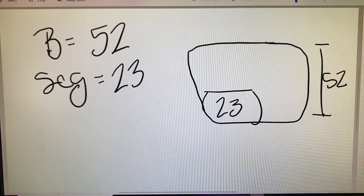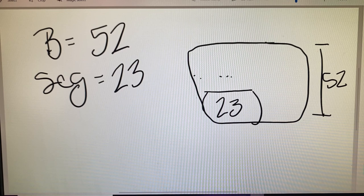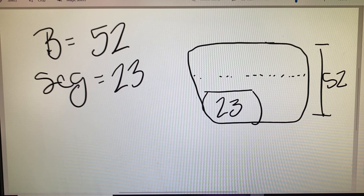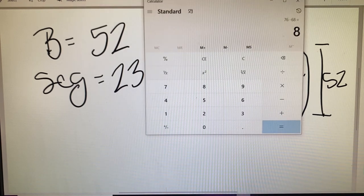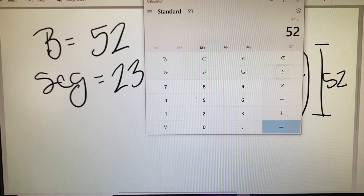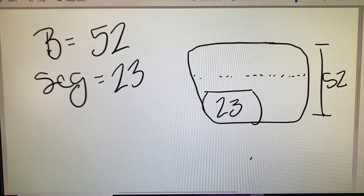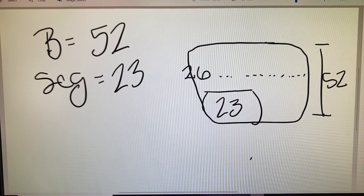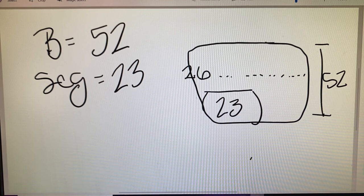We've got to determine what is the datum line measurement of our frame. So we're going to grab that calculator. We're going to do 52 divided by 2. That's the halfway point. We're finding that at 26 millimeters. So the datum or 180 line is at 26. We have a seg of 23.